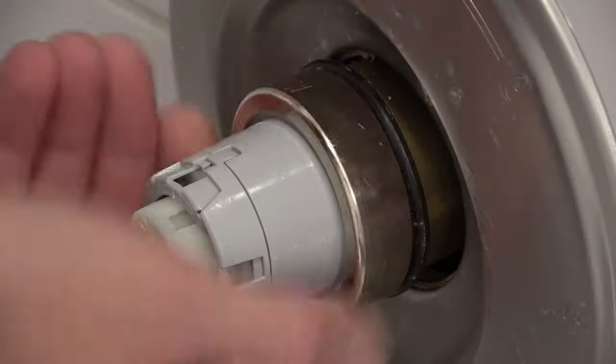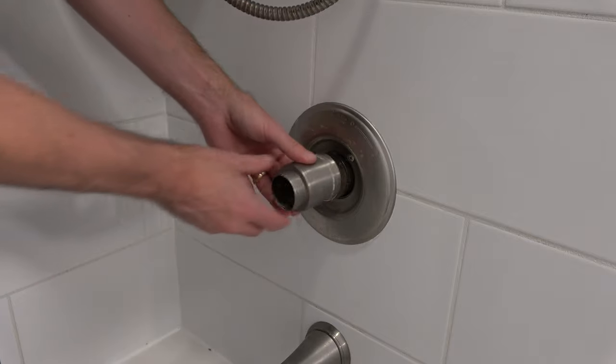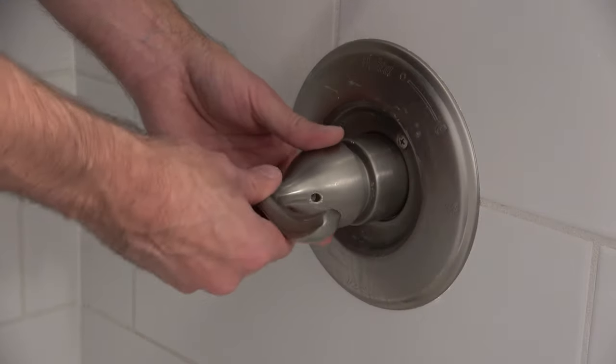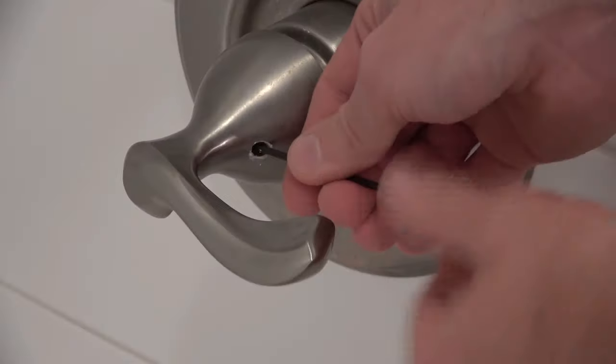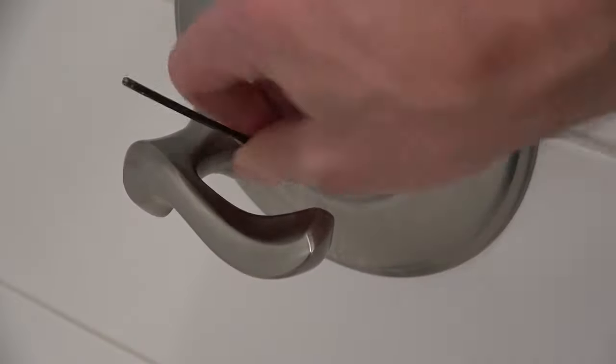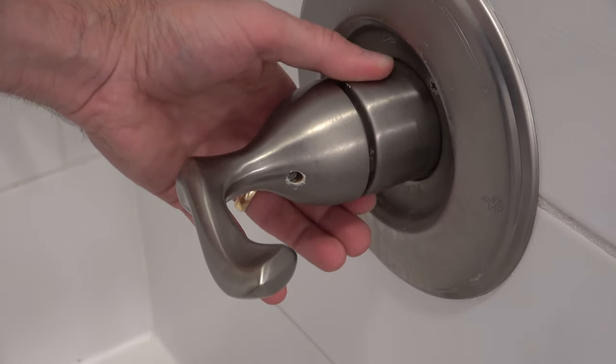Then twist on the metal ring and put back on the outer insert. Put the handle back on and tighten it back up with the allen wrench, and adjust the outer insert so it's back in place.